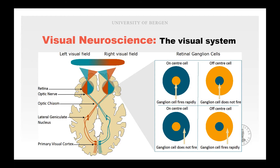These receptors are connected to retinal ganglion cells, which form on-off receptive fields that are essential to further processing of visual information and structuring such as edge detection. We'll come back to that later.